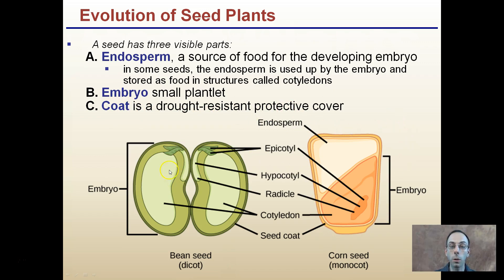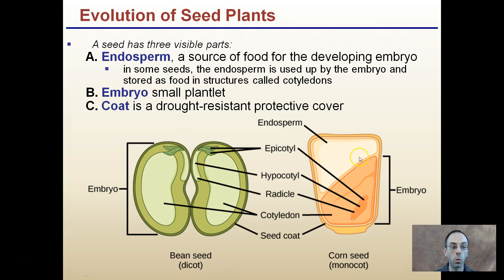The seed coat is a drought-resistant protective outer layer. We can see a comparison between a bean seed and a corn seed. They share many of the same parts, but the key difference is the cotyledon. The bean seed has two cotyledons — making it a dicot — while the corn has only one cotyledon, making it a monocot.